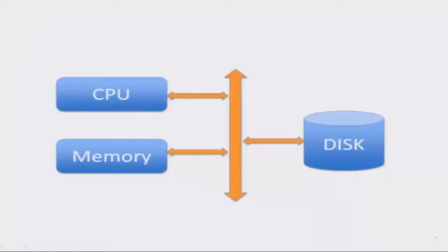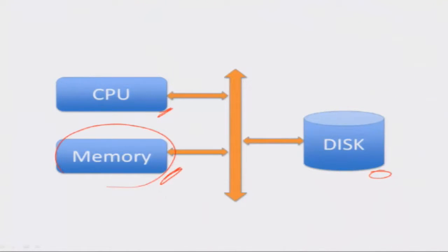We will have a quick look into what's a DBMS. Here is a simplified model of a computer — there is a central processing unit, there is a memory, and there is a disk. Programs and data are sitting on the disk; they are brought into the main memory and the CPU executes these programs. After execution is over, some of the data is written back onto the disk.